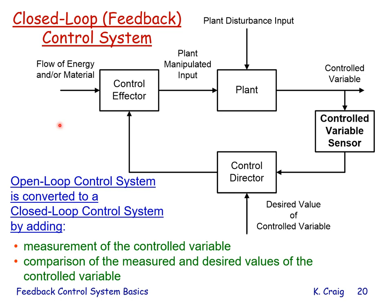How is an open-loop control system converted to a closed-loop or feedback control system? The open-loop control system is converted by adding measurement of the controlled variable using a feedback element that tells the control director what the controlled variable is. In the control director, we compare the measured value of the controlled variable with its desired value, and based on that difference, we take action. The two elements added are: measurement of the controlled variable, and comparison of that measurement to the command.